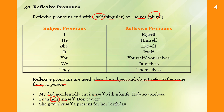She gave herself a present for her birthday — here 'she' and 'her' refer to the same person, so we use the reflexive 'herself.'